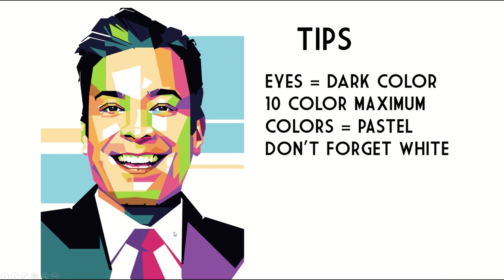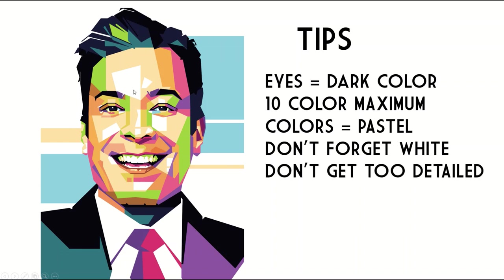Don't forget to use white as one of your colors. Eyes, teeth, shirt — those are all white in real life and this artist kept them white in the WPAP poster too. His teeth aren't green and his eyes aren't bright pink. Keep those white if you can, at least as a baseline when starting out. Don't get too detailed — a nice mix of tiny shapes and large shapes is ideal. The teeth are well defined but it's not a mosaic. Vary that shape size: big color swatches on the tie and shirt, and some small ones too.